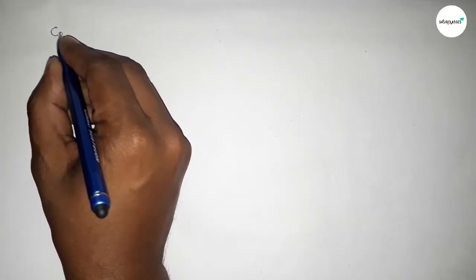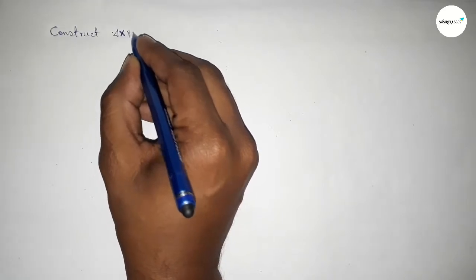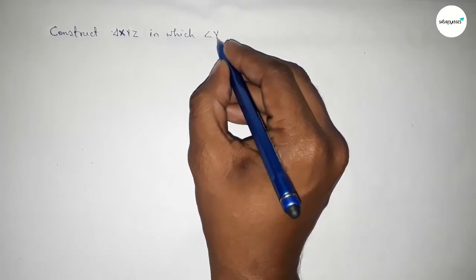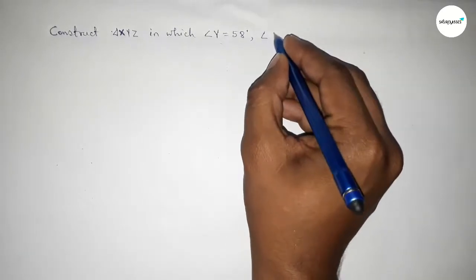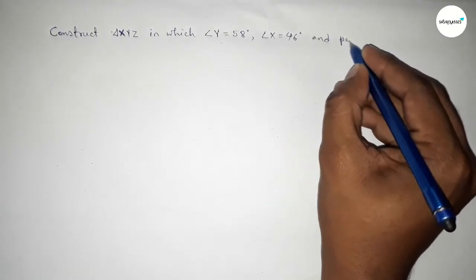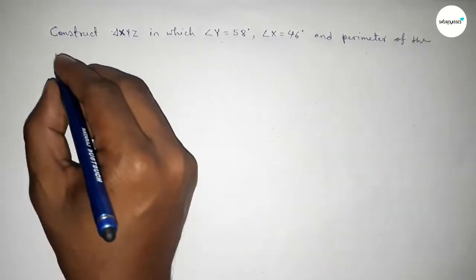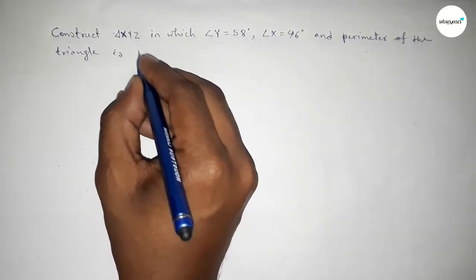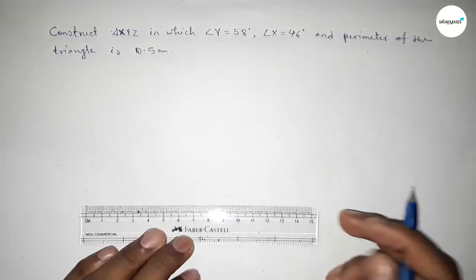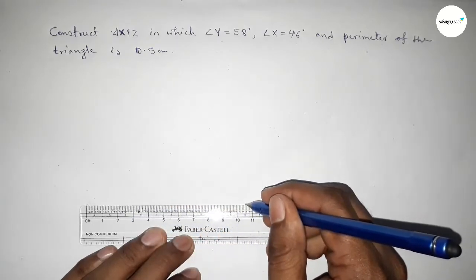Hi everyone, welcome to classes. Today in this video we have to construct a triangle XYZ in which angle Y equals 58 degrees, angle X equals 46 degrees, and the perimeter of triangle XYZ equals 10.5 centimeters. So let's start the video. First of all, drawing here a line of length 10.5 centimeters.